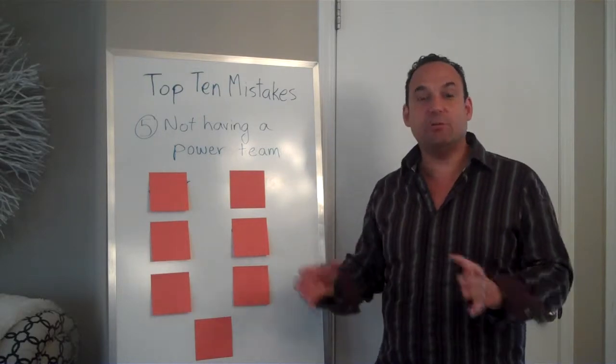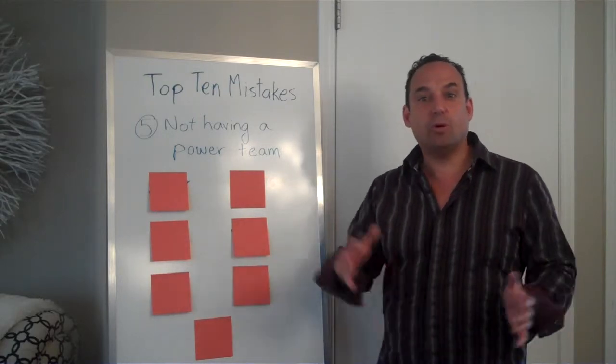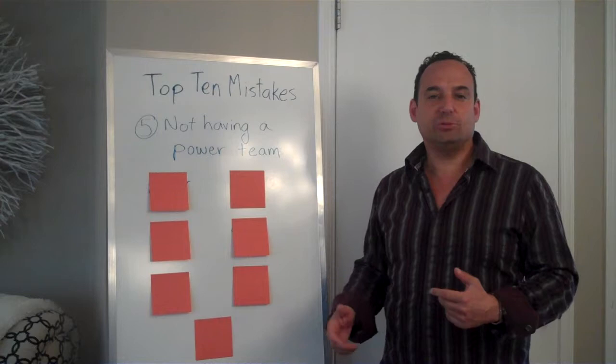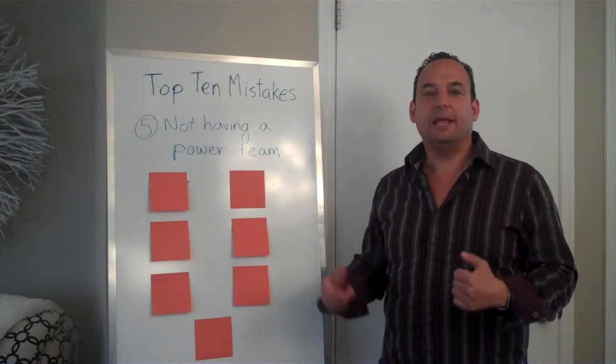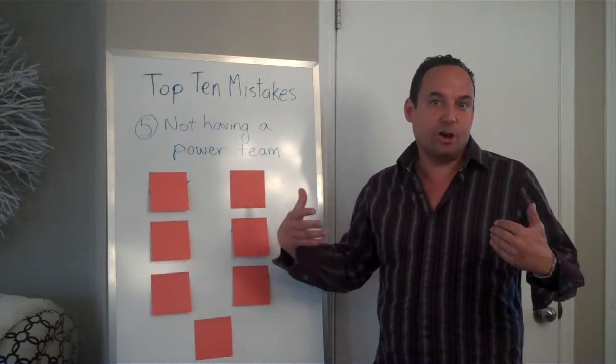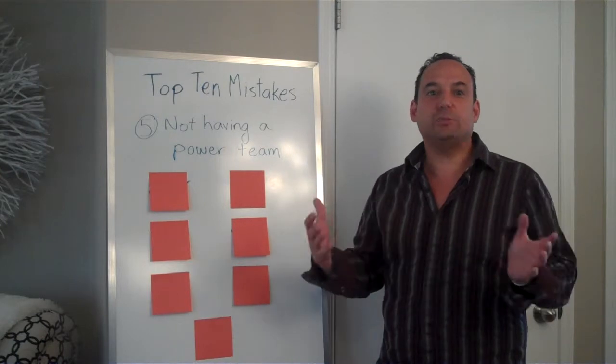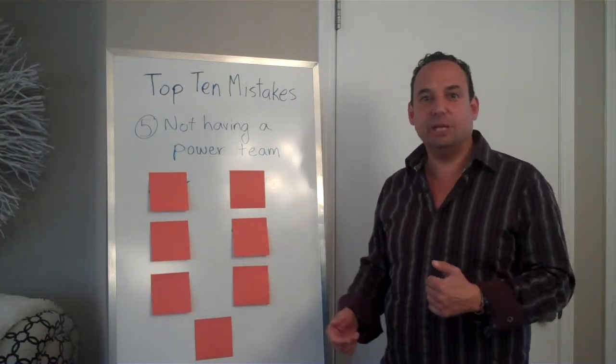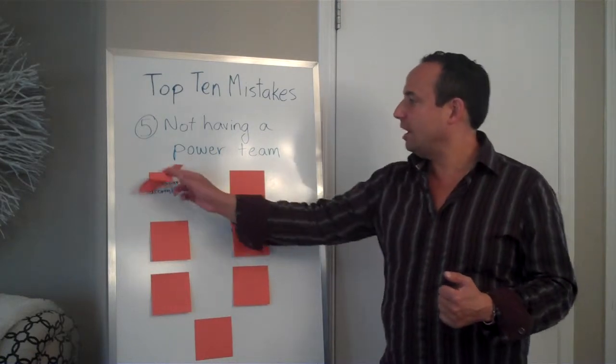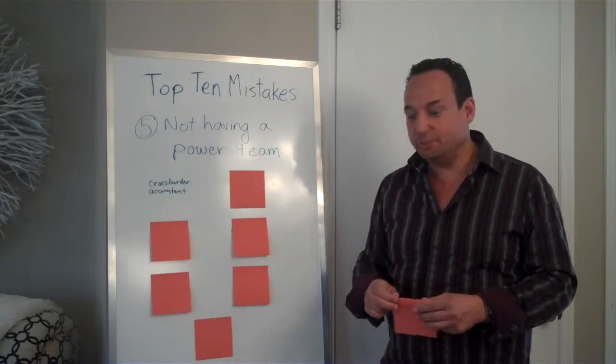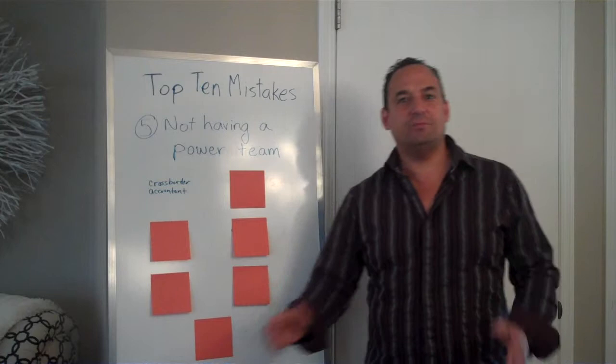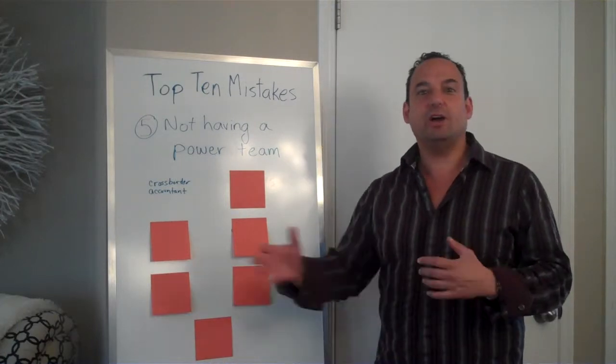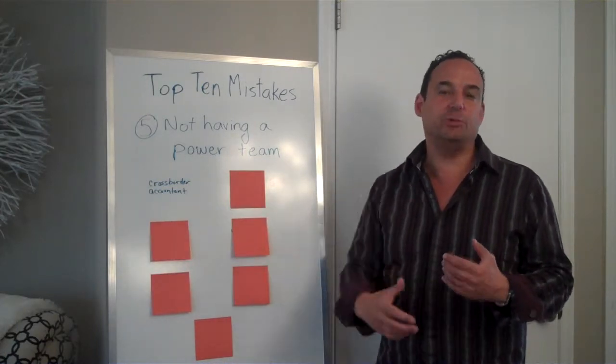And if this person over here isn't cooperating or communicating properly with the person here or the person here, you don't have a team. And you're going to have a big mess and you're going to always be changing people and that's costly and time consuming. So what I want to do is go through some of the different people you're going to require on your team.